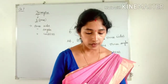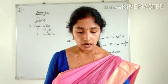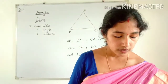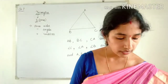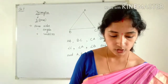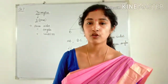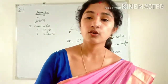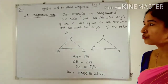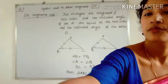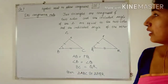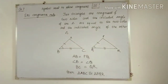The first topic we will study under congruency of triangles is the SAS congruence rule. This is also called an axiom. The rule states: two triangles are congruent if two sides and the included angle of one triangle are equal to the two sides and the included angle of the other triangle. This rule is called the SAS congruence rule.